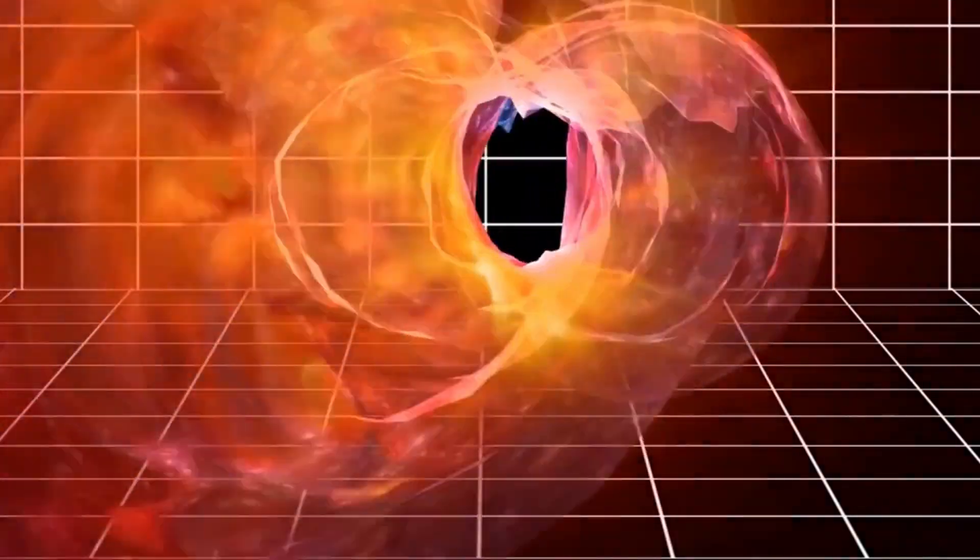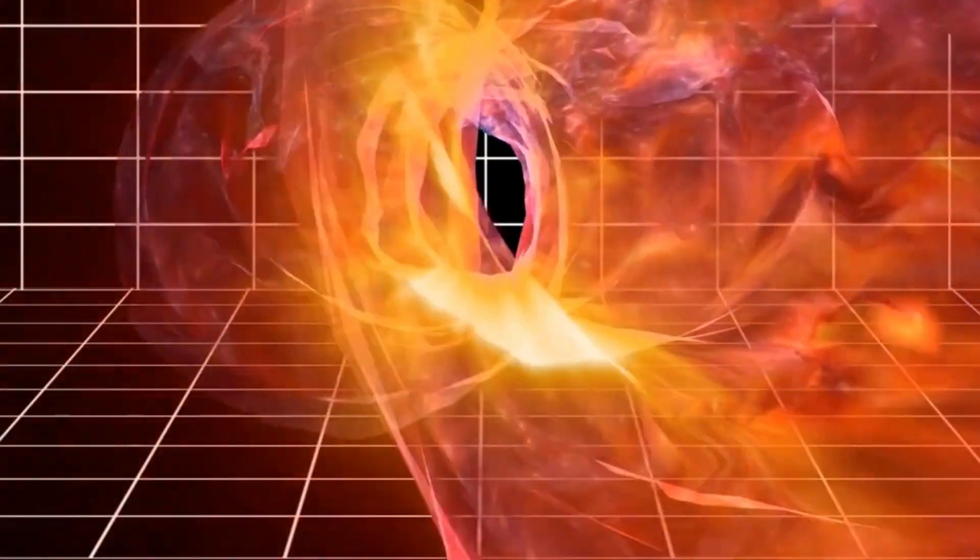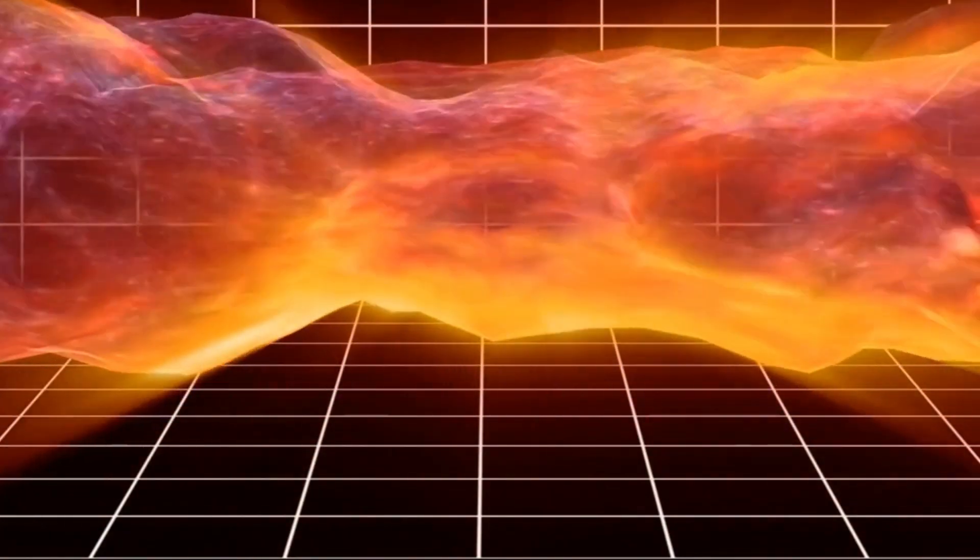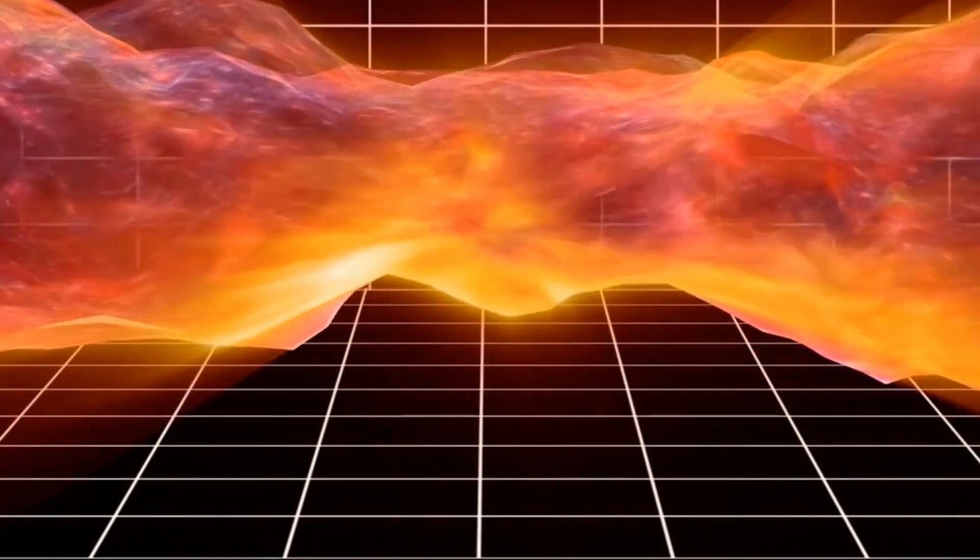The Kerr metric also implies that black holes are very simple objects, in the sense that they are completely characterized by their mass, angular momentum, and electric charge. This is known as the no-hair theorem, and it means that any other information about the matter or radiation that formed or fell into a black hole is lost behind the event horizon. This is also why black holes are sometimes called bald or naked, because they have no distinguishing features apart from their hair: mass, angular momentum, and charge.